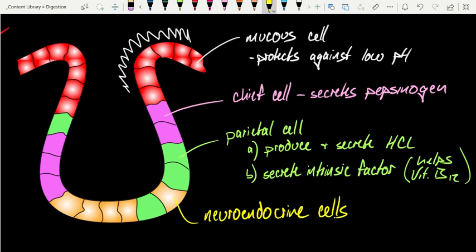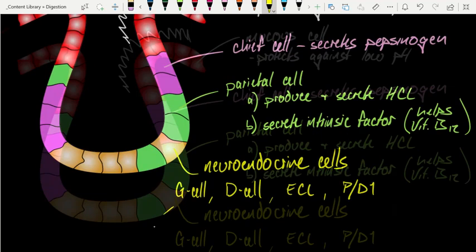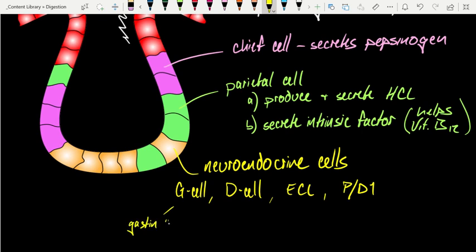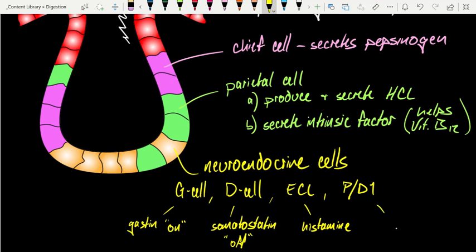The neuroendocrine cells include the G cell, the D or delta cell, the ECL (enterochromaffin-like) cell, and the PD-1 cell. These are all involved in regulating the function of the cells around them. Specifically, the G cell releases gastrin — the on switch for the system. The D cell is all about somatostatin, which is the off switch. The ECL cell releases histamine, a driver of stomach acid independent of food. And from the PD-1 cells, we see the release of ghrelin — a hunger hormone that increases feeding, increases weight gain, and is triggered when the stomach is empty.